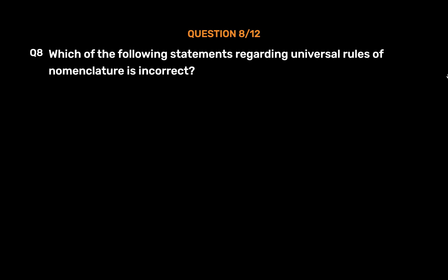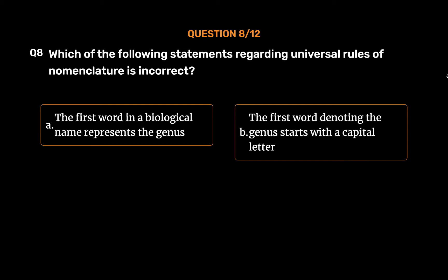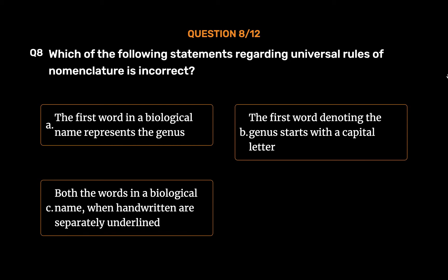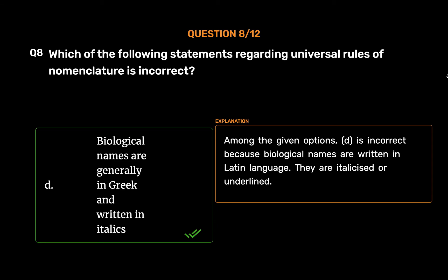Question No. 8. Which of the following statements regarding universal rules of nomenclature is incorrect? Option A: The first word in a biological name represents the genus. Option B: The first word denoting the genus starts with a capital letter. Option C: Both the words in a biological name, when handwritten, are separately underlined. Option D: Biological names are generally in Greek and written in italics. Option E: The second component in a biological name denotes the specific epithet. The correct answer is Option D. Option D is incorrect because biological names are written in Latin language. They are italicized or underlined.